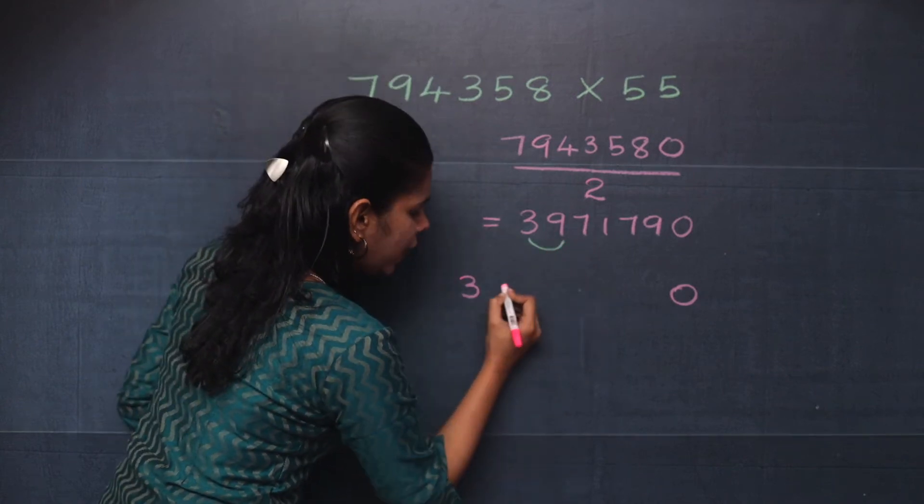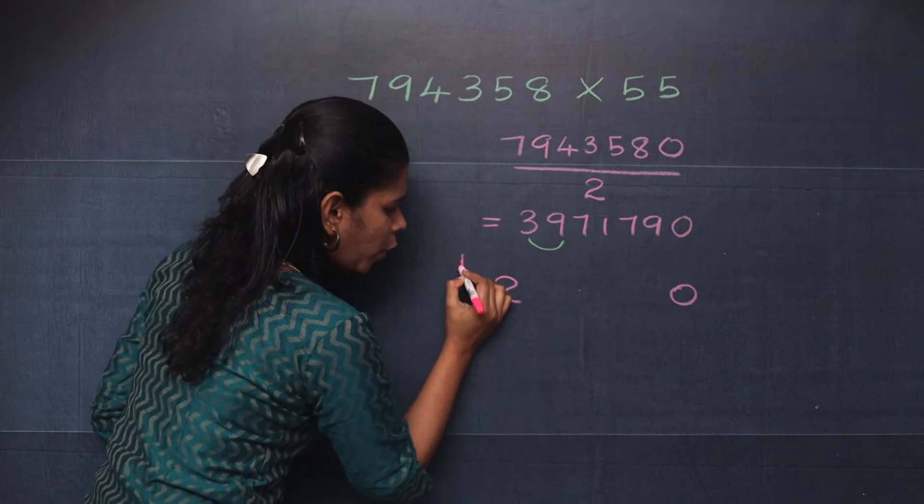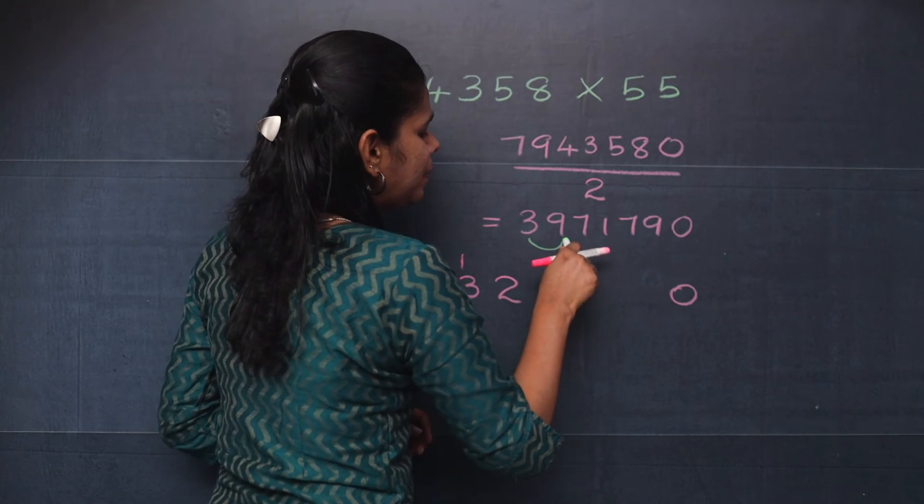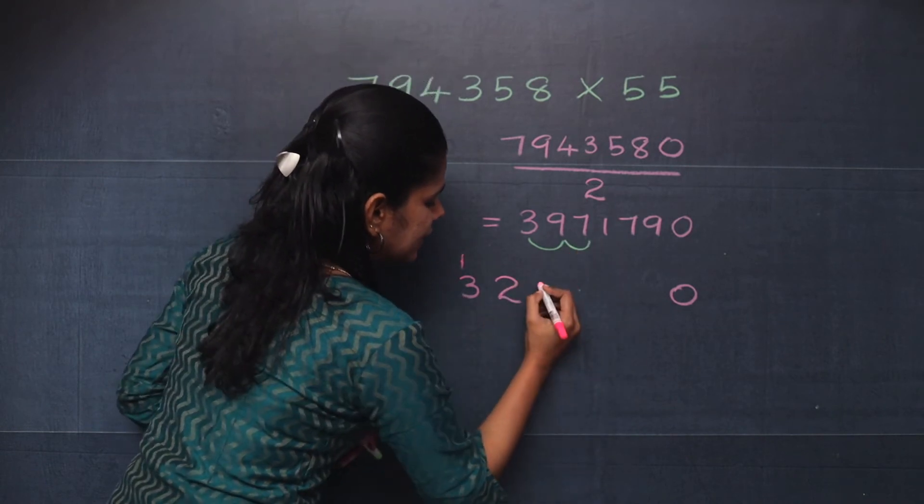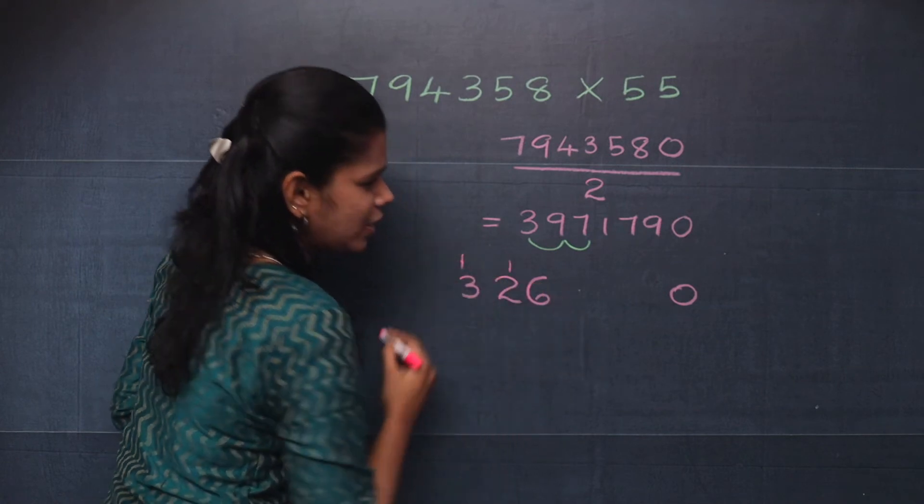You will get 12. So you will write 2 here and that carry over 1 here. Now what is 9 plus 7? It is 16. So you will write 6 here and that carry over 1 here.